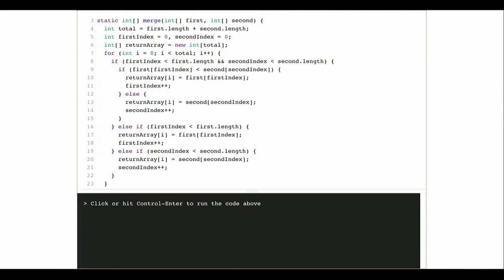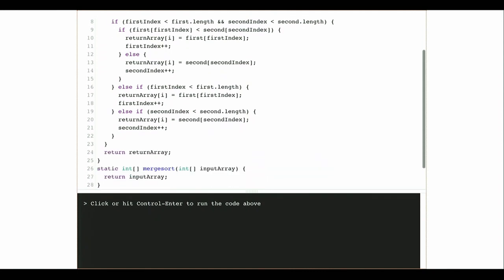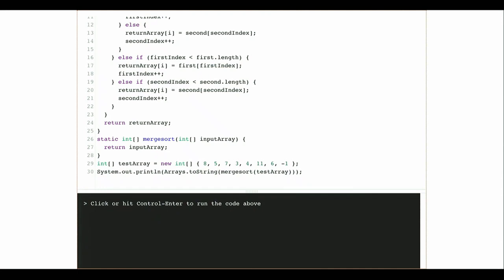There are two cases I need to handle: one case is that one of the two arrays is empty, and the other case is that both arrays are not empty. What I do is compare the items at the front of these two arrays and choose whichever one is smaller. We approach the problem pretty much the same way, a little bit different, but it should be something you can understand.